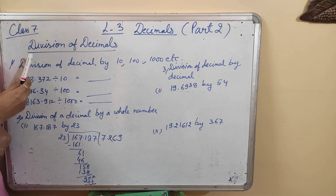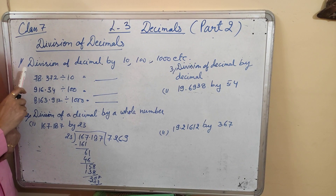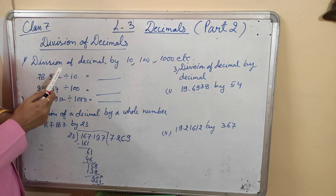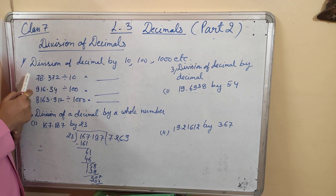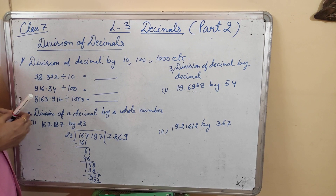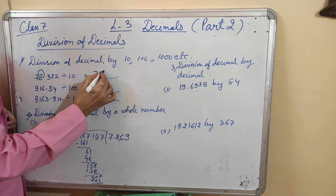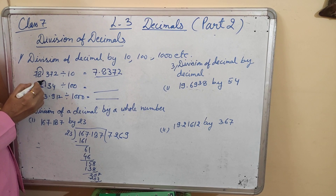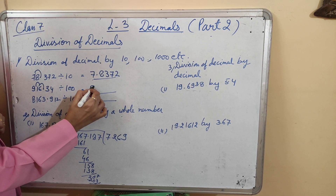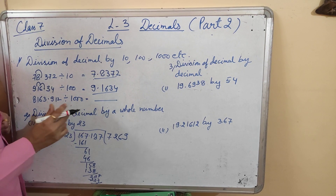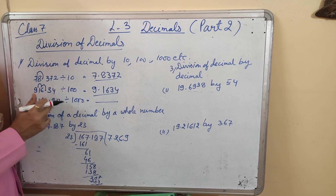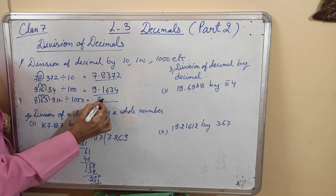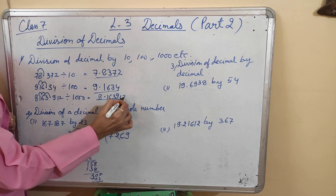Now I will explain how we can do the division of decimal numbers. When we have to divide a decimal number by 10, 100, or 1000, the decimal has to move towards the left side one place when we divide by 10, so the answer will be 7.8372. When we divide by 100, the decimal moves 2 digits to the left, so the answer will be 9.1634. When we divide by 1000, the decimal moves 3 digits to the left, so 8.163912 is the answer.